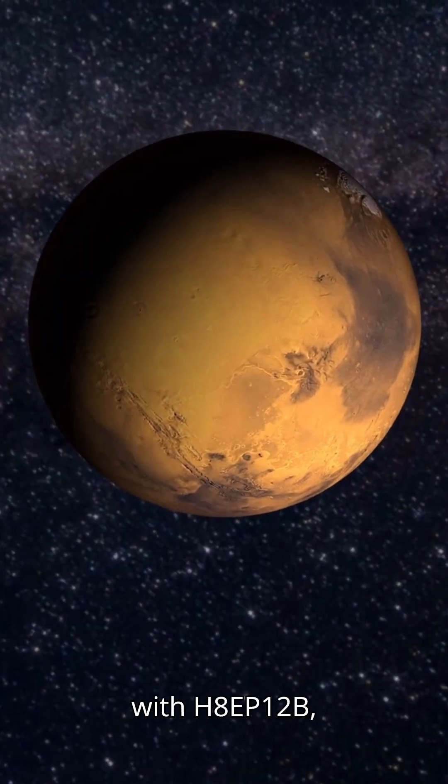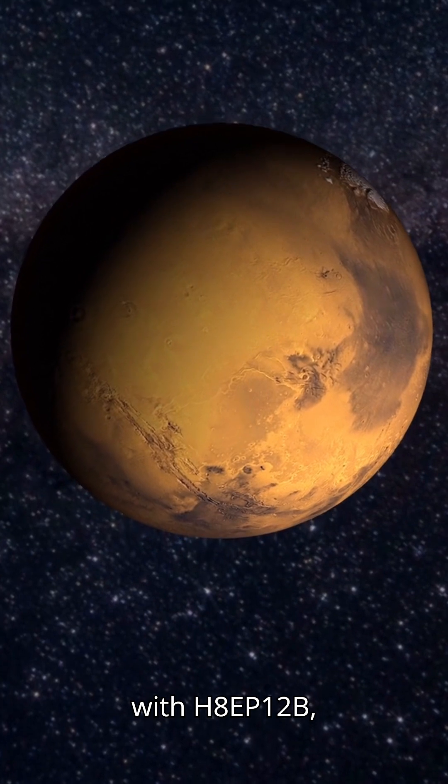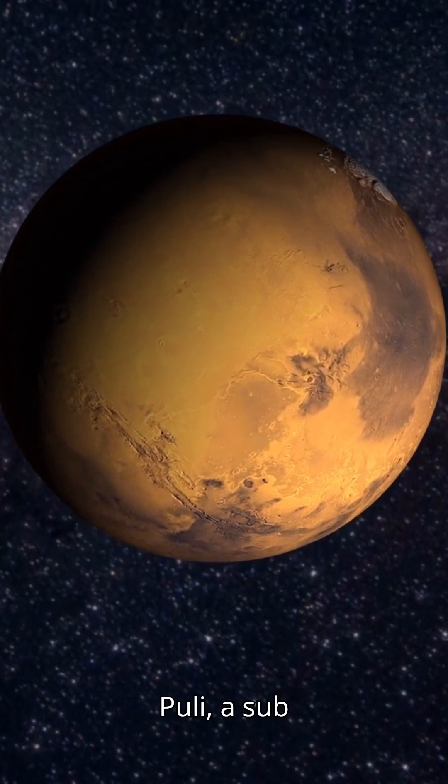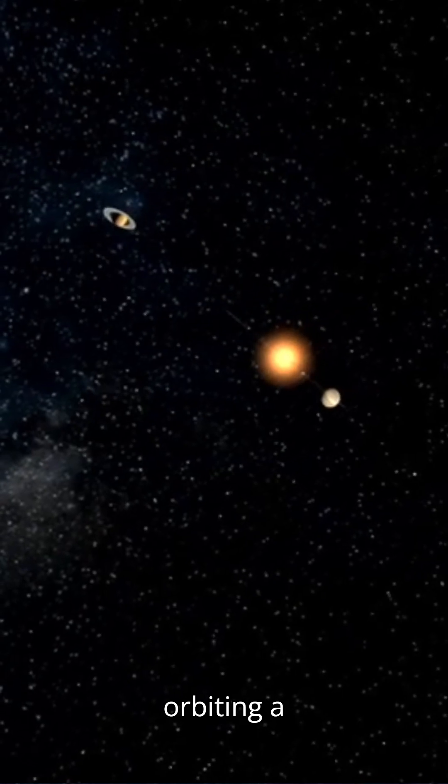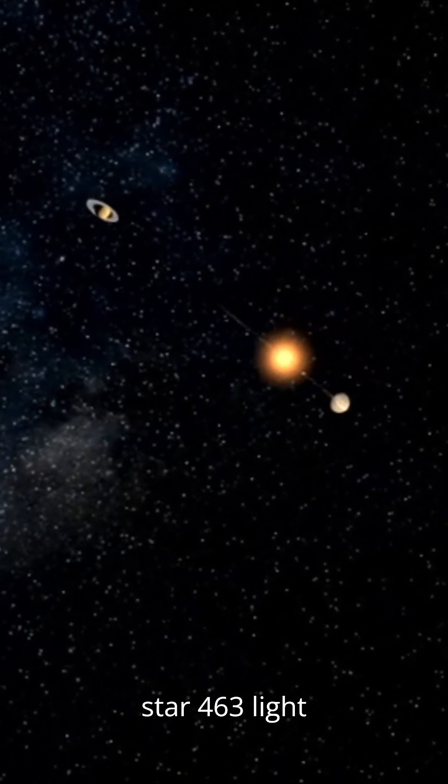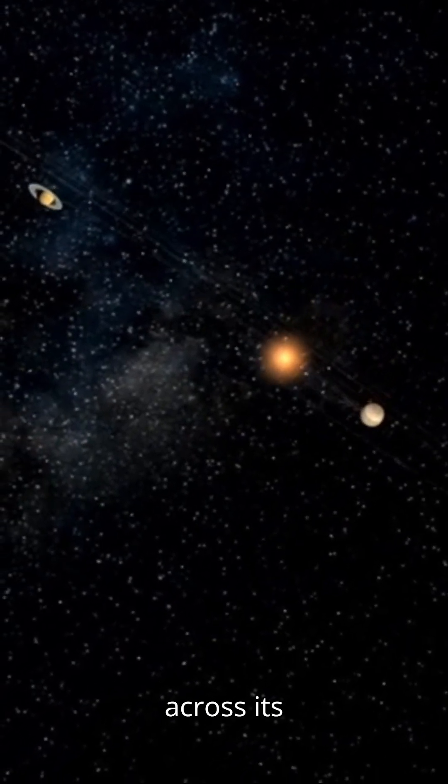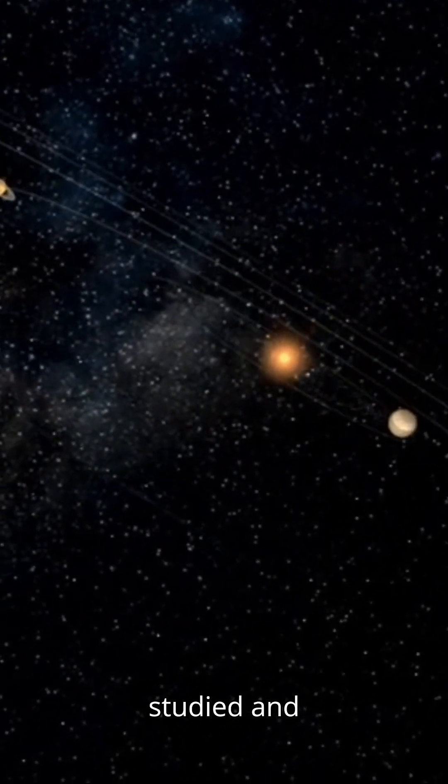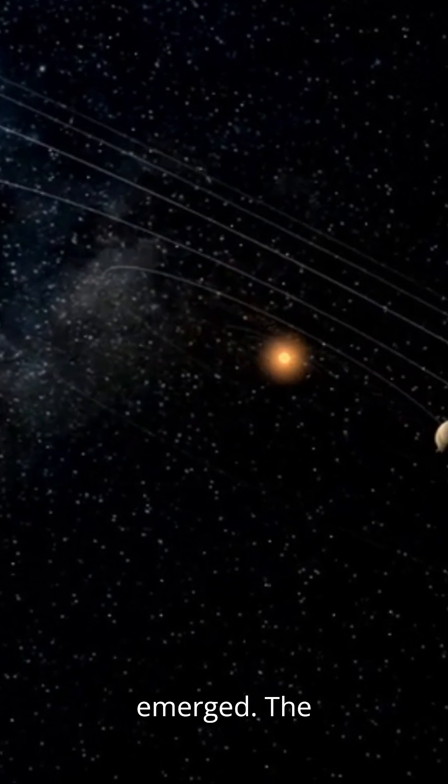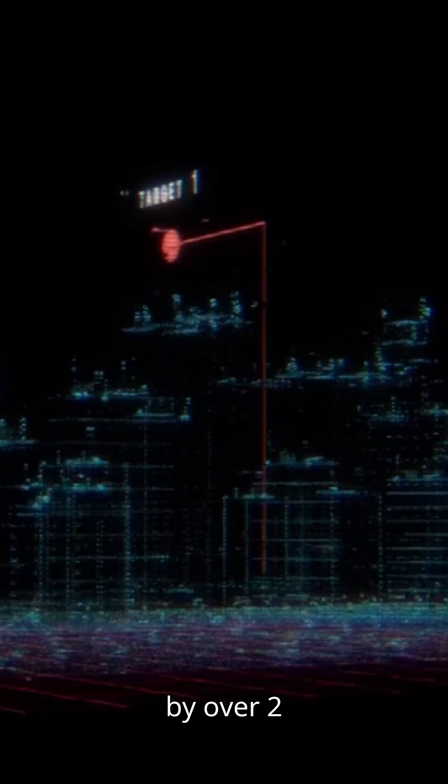That's what happened with HAEP12b, also known as Puli, a sub-Saturn-sized planet orbiting a star 463 light-years away. For years, Puli's transits across its star were studied, and something strange emerged. The timing was off by over two minutes.